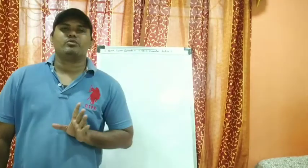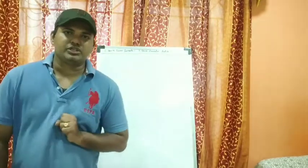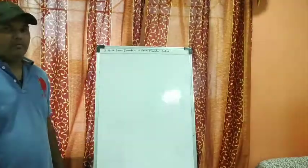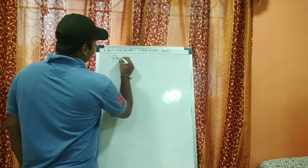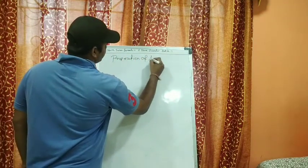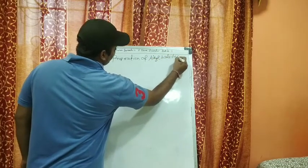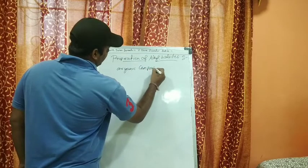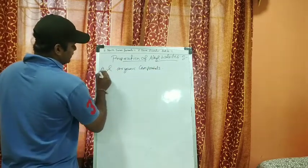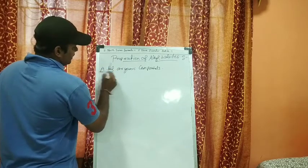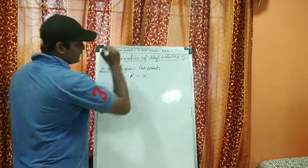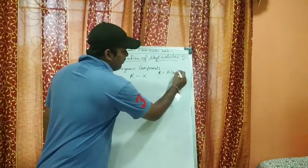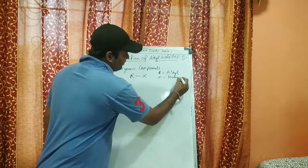Preparation of alkyl halides is a very important question in your board exam, so whatever reactions I give you today, you all have to note them down. Put the heading: Preparation of Alkyl Halides. Alkyl halides are organic compounds containing an R–X bond, where R stands for the alkyl group and X stands for the halogen group.